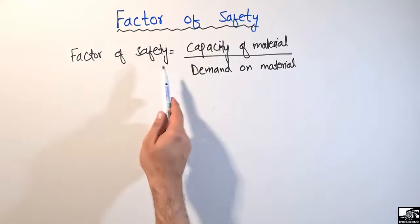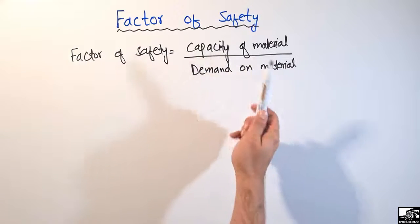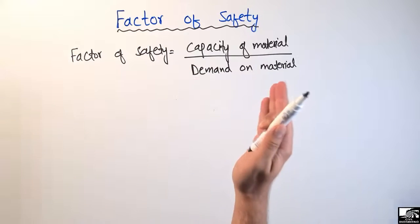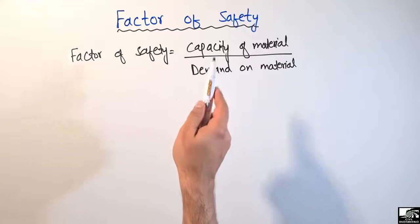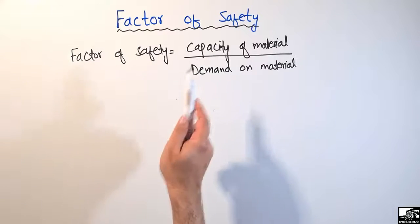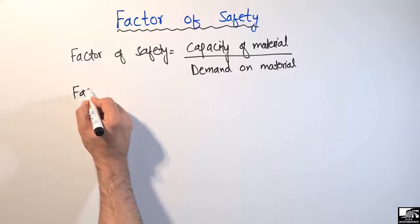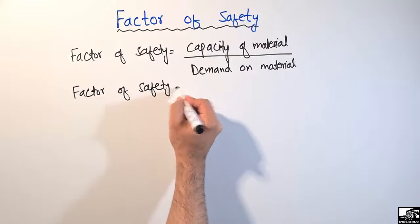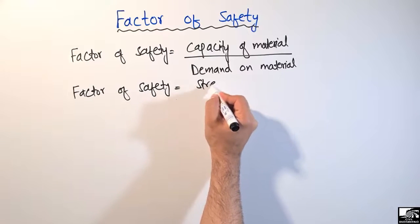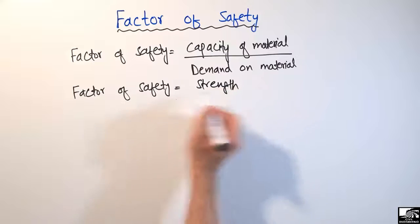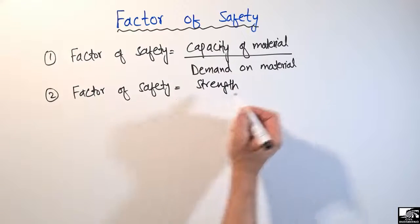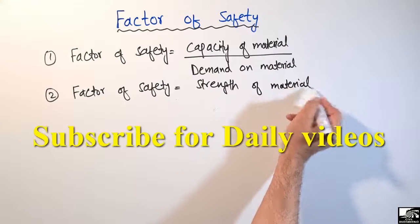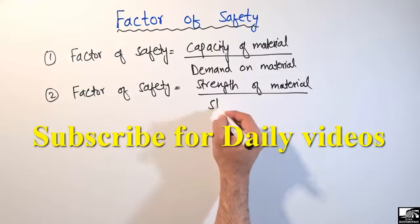How much capacity your material has to take the load, and how much load demand is coming on your material — the ratio of these two terms is known as the factor of safety. We can also define factor of safety by another way: factor of safety is equal to the strength of the material divided by the stress on the material.